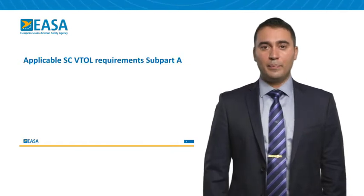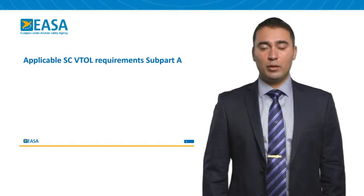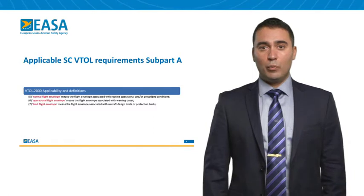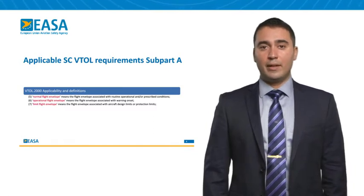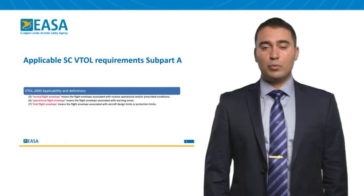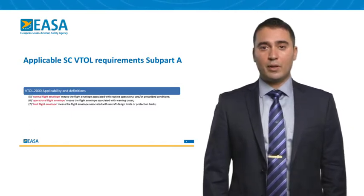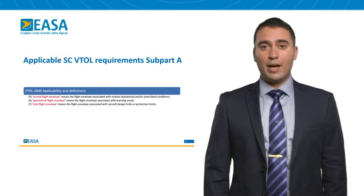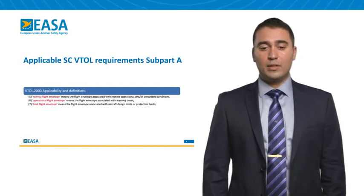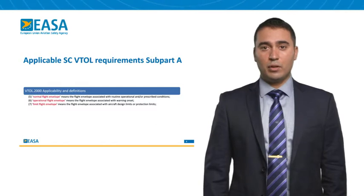We're going to go through the different requirements from the special condition VTOL across all different subparts, starting with subpart Alpha. The first requirement is VTOL 2000 applicability and definitions, where we have three different flight envelopes: the normal flight envelope, which is associated with routine operation and/or prescribed conditions; the operational flight envelope, which is associated with warning onset; and the limit flight envelope, which is associated with aircraft design limits and protection limits.